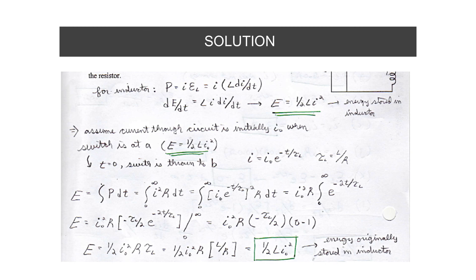That's all for chapter 11. Make sure you fully understand the LR circuit, because after this we will move on to LRC and LC circuits — it will be continuous. Understand the behavior of the LR circuit, then the LC circuit, and then we will combine everything in LRC. Thank you very much, Assalamualaikum, and bye-bye.